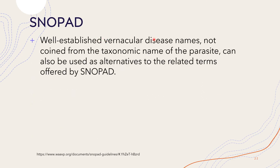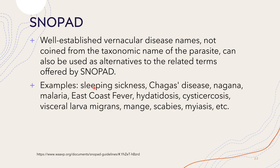Well-established vernacular disease names not coined from the taxonomic name of the parasite can also be used as alternatives to SNOPAD terms. Examples include: sleeping sickness, Chagas disease, nagana, malaria, East Coast fever, hydatidosis, cysticercosis, visceral larva migrans, mange, scabies, myiasis, and others.